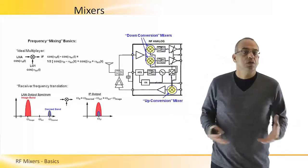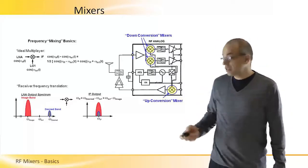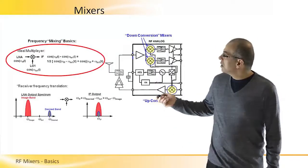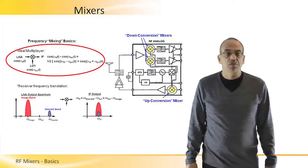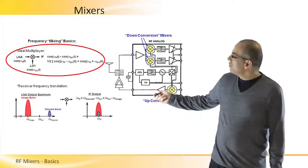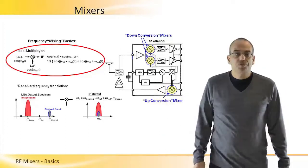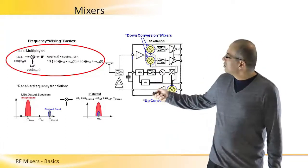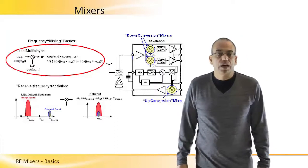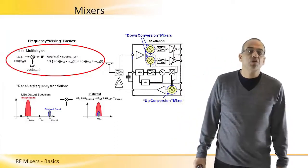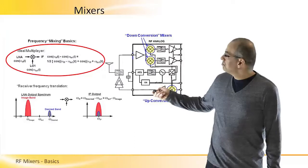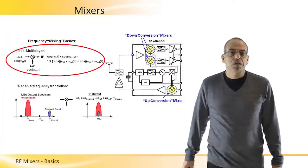Multiplying two cosine circuits, so here we can see a description of an ideal multiplier. We have an RF frequency that is multiplied with an LO frequency, local oscillator frequency, and if we just do the simple multiplication